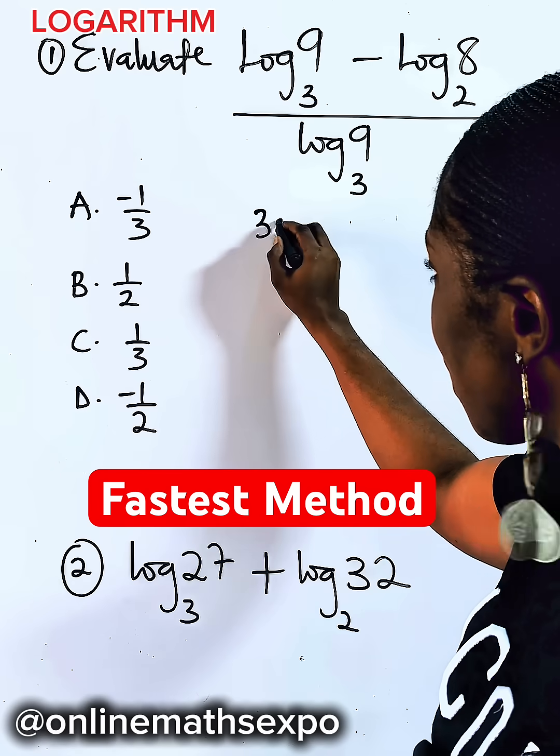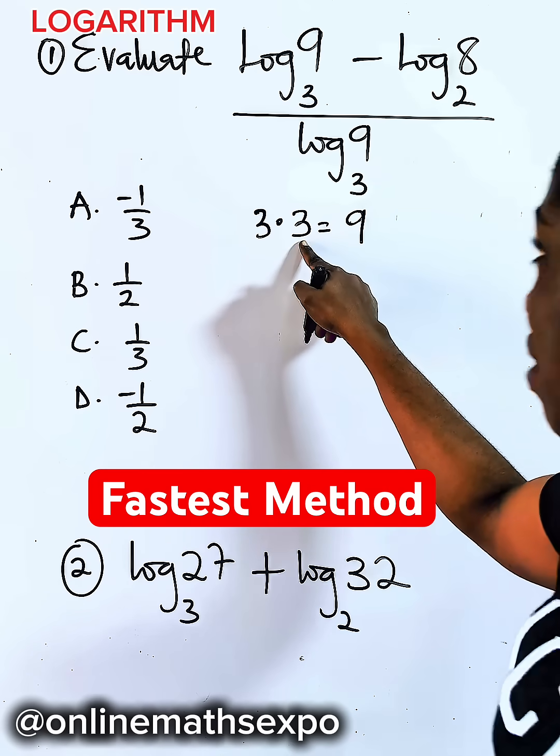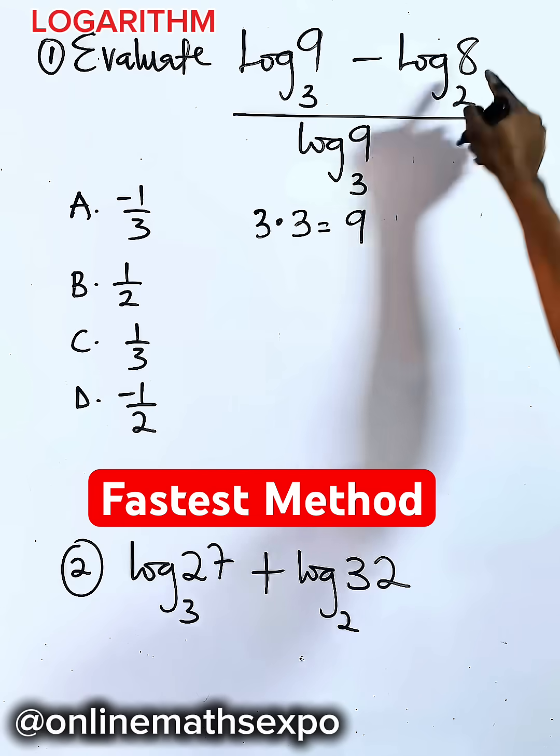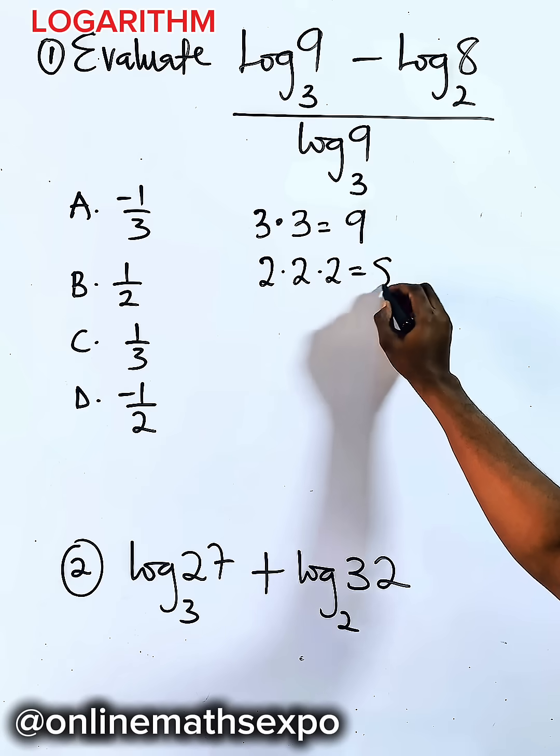You know, 3 multiplied 2 times gives you 9, so you are multiplying 2 times. And this one means how many times can you multiply 2 to give you 8. You know that 2 multiplied 3 times gives you 8.